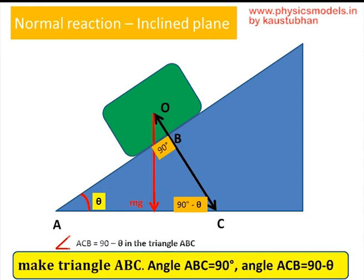The second step is: since the block pushes on the plane and the plane pushes back on the block, draw a line perpendicular to the incline, as shown, which becomes OC. Therefore, angle ACO becomes 90 minus theta because the angle at B is 90 degrees, so 90 plus 90 minus theta plus theta will sum to 180 degrees.